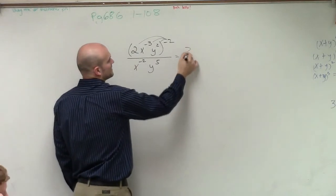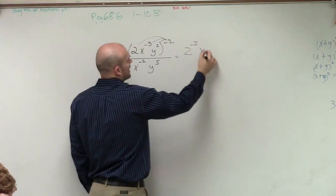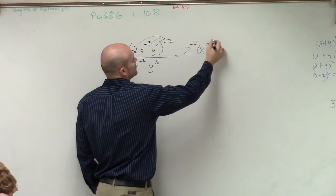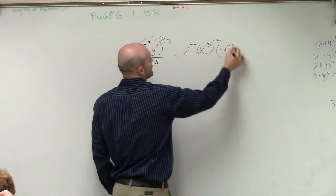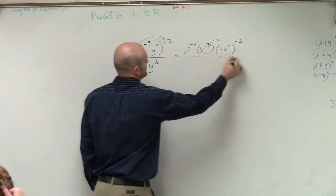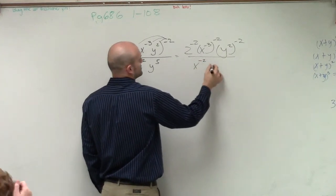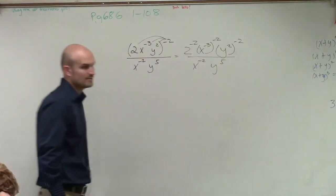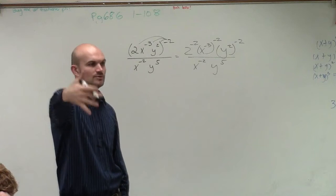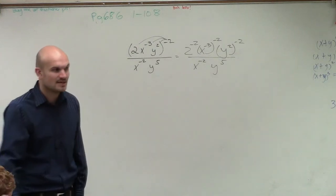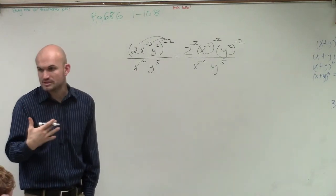So therefore, this is going to be 2 to the negative second, x negative cubed to the negative second, and then y squared to the negative second, all over x squared times y to the fifth. So remember, we need to make sure we distribute our powers among products and quotients.